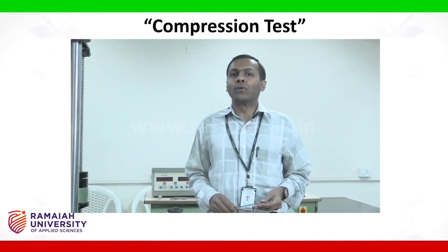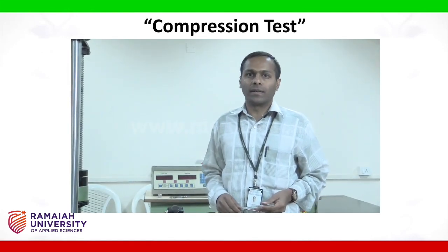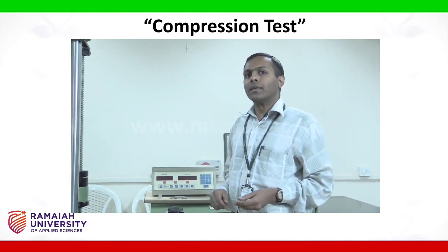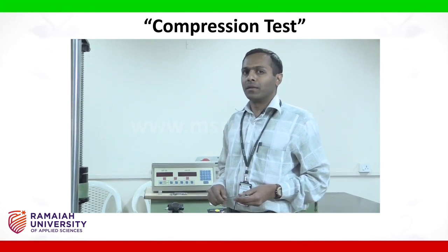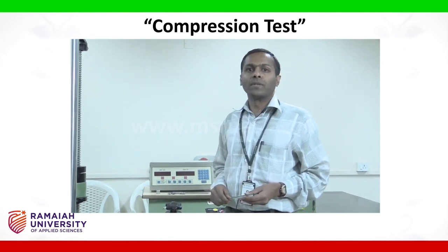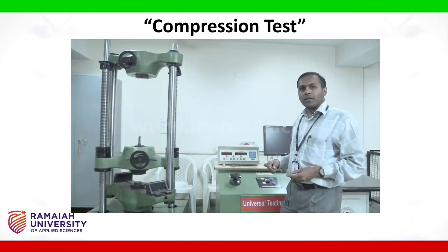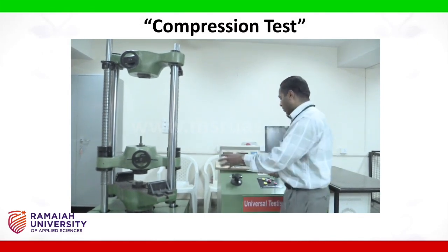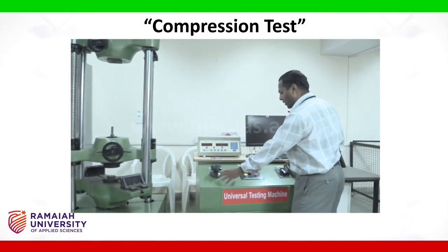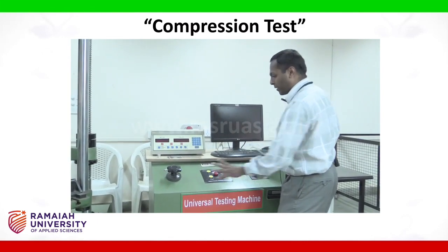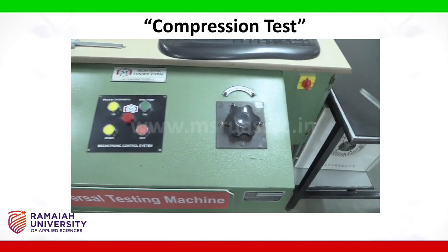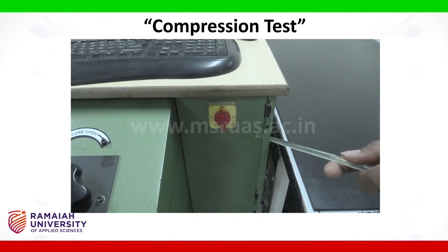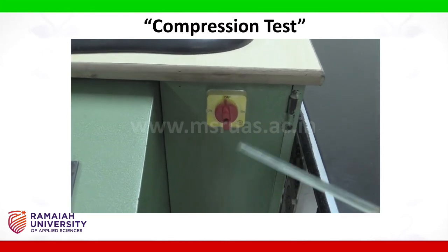Hello students. Today we are going to conduct a compression test. The aim of the experiment is to study the compressive behaviour of the material and to find out the compressive strength of the material. The universal testing machine consists of a loading unit which is hydraulically operated. It is controlled through the knobs and controls on the control panel. The power to the UTM is controlled with this knob, and by turning it on we switch on the power supply to the UTM.